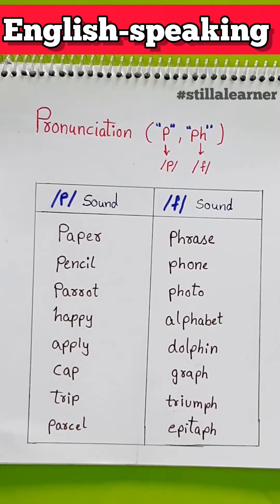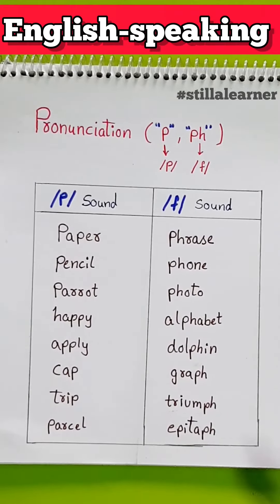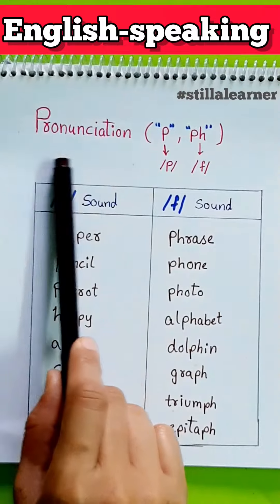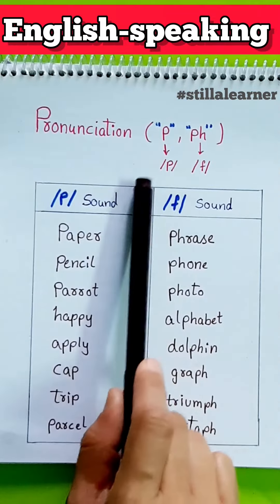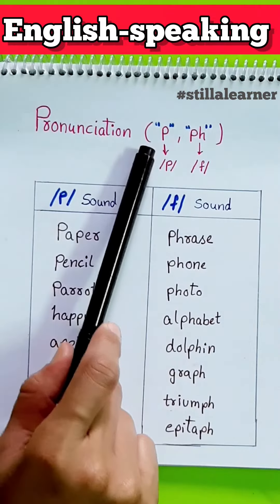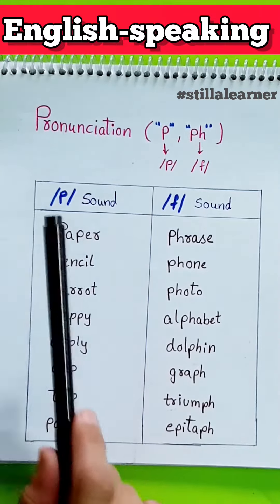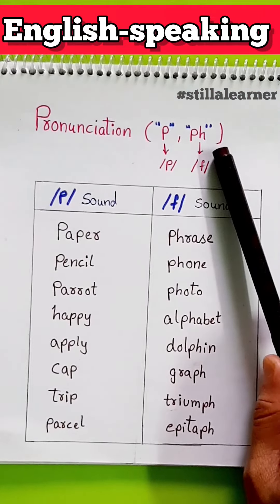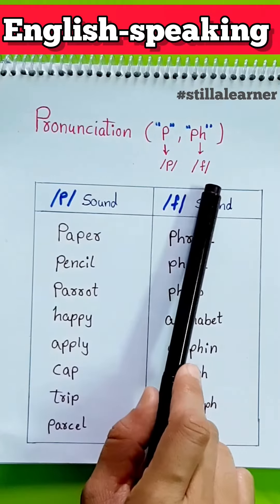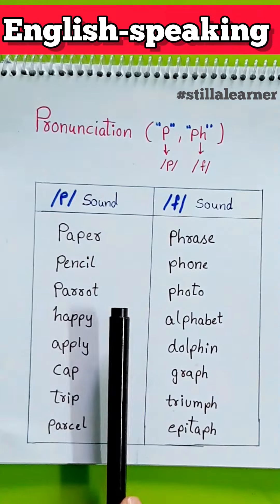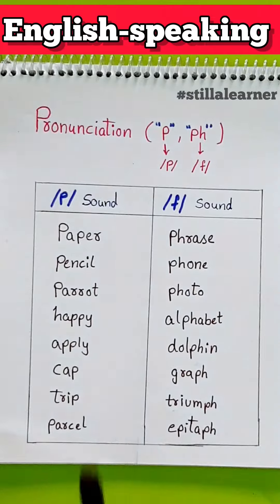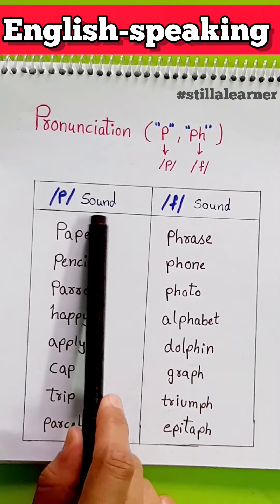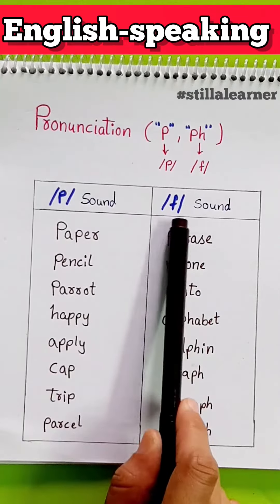Good morning everyone. Today we will see the pronunciation class that is P and PH sound. We use P sound for the letter P in a word and F sound for PH in a word. Okay? Have a look at these sounds: P sound, F sound.